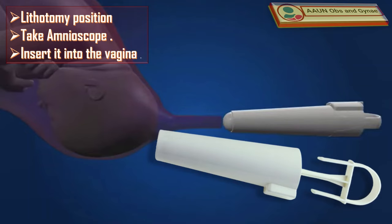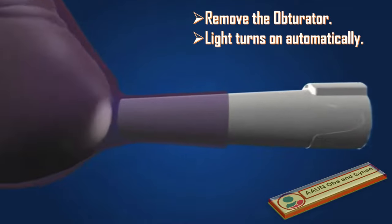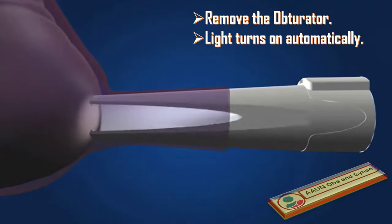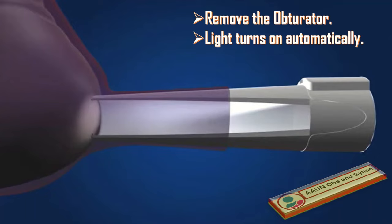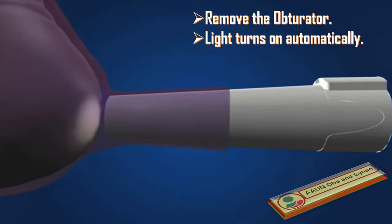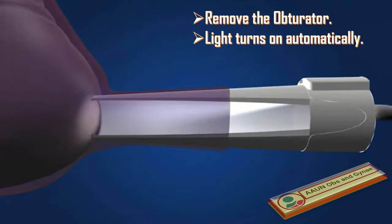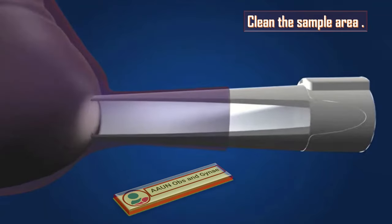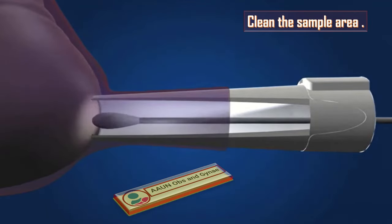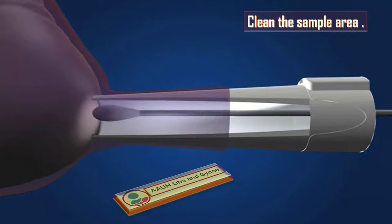Insert the amnioscope to ensure you have a good seal against the fetal head, then remove the obturator. You will notice that by removing the obturator, the light turns on automatically. Using the cotton swab, clean the sample area and move any hairs aside if required.